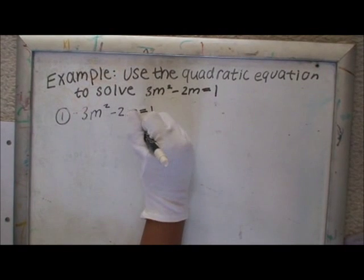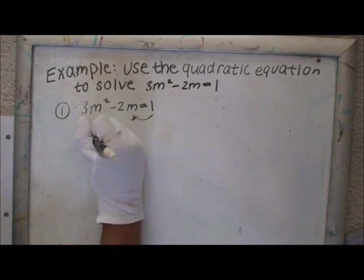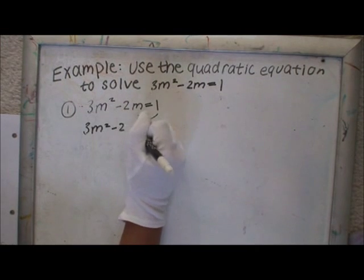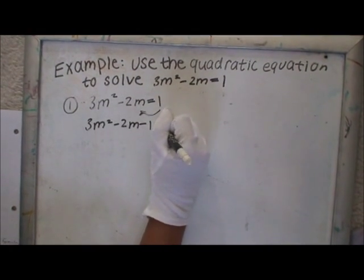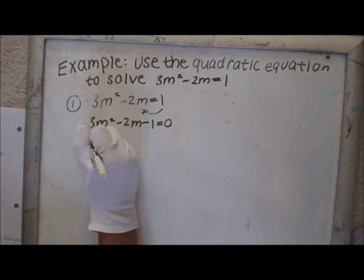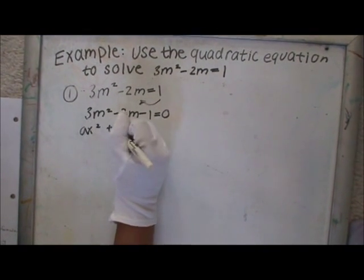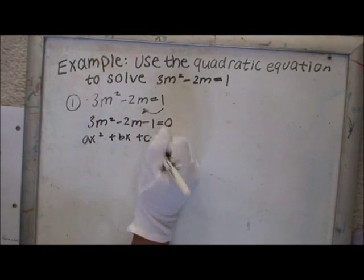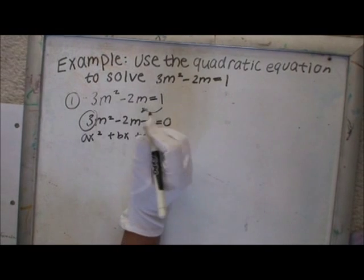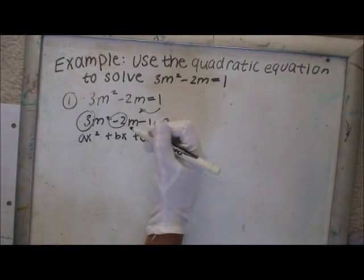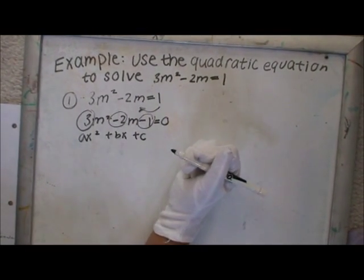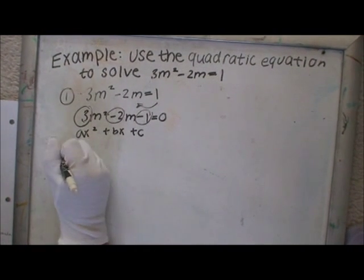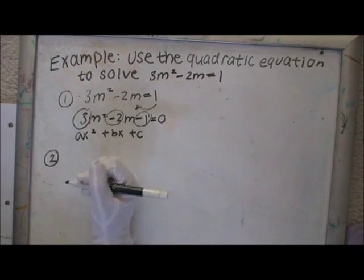Move that one to the other side. The 3 is the A, the negative 2 is the B, and negative 1 is C. The second step is to plug it into the quadratic equation.